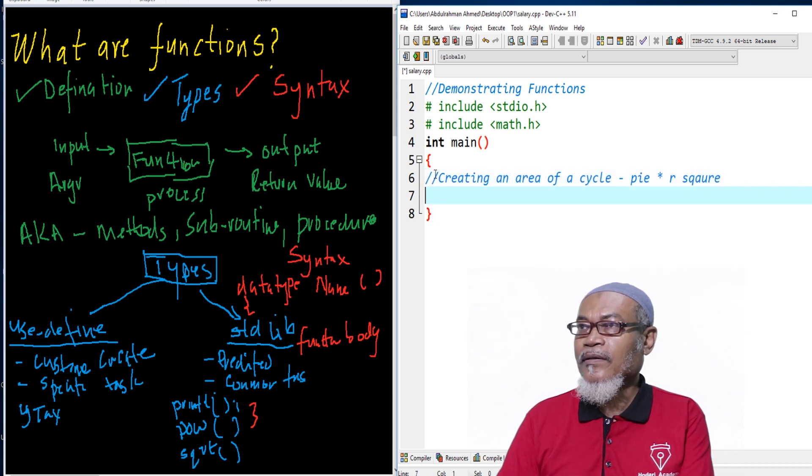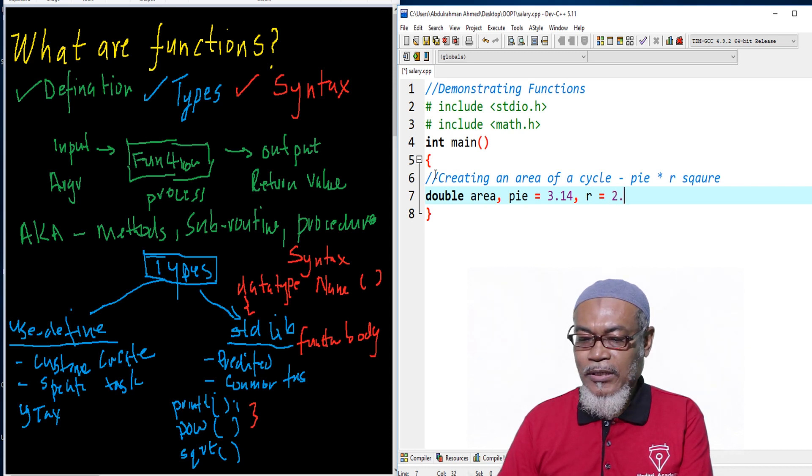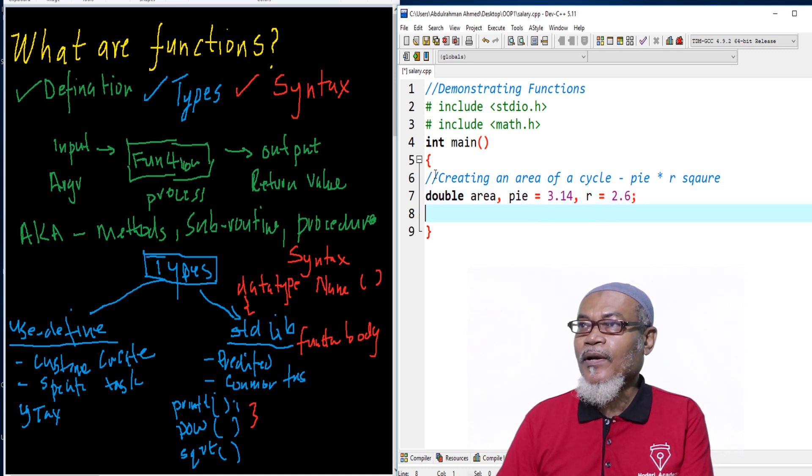Our program is about creating an area of a cycle. We know area of a cycle gives us pi times r square. So what do we want to use? Let's start. We can take up some variables, maybe double. We need area, we need pi, and we know pi is 3.14. We also need r, that is the radius. Let's take, for example, radius is 2.6.